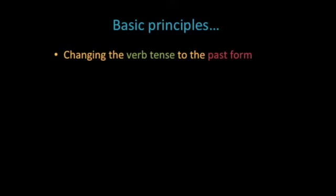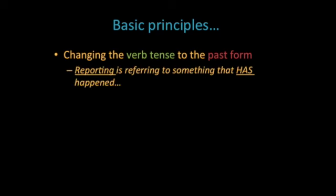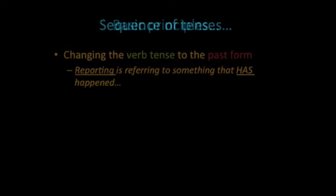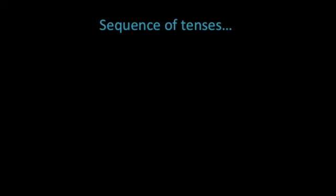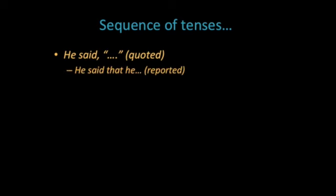Now let's look at some of the basic principles of making this shift. We must change the quoted verb to the past form. That is because we are talking about something that has happened in the past. Past tense, however, can actually mean one step back, as we will see in the next few slides. That is why we call this a sequence of tenses. The tense shifts from the original form in the quoted speech to one step back in the past to the reported form.